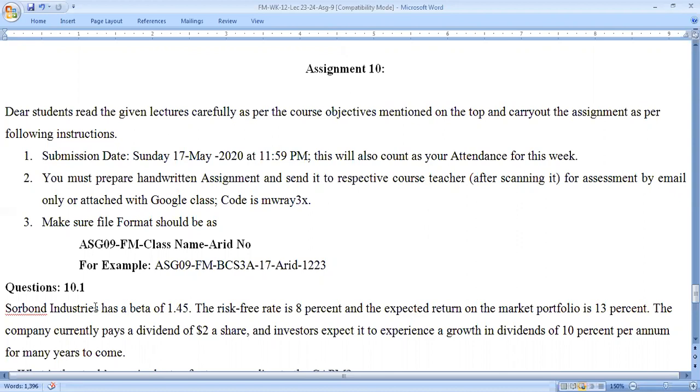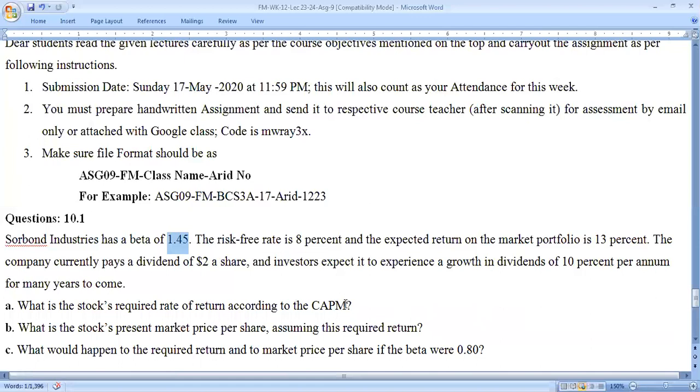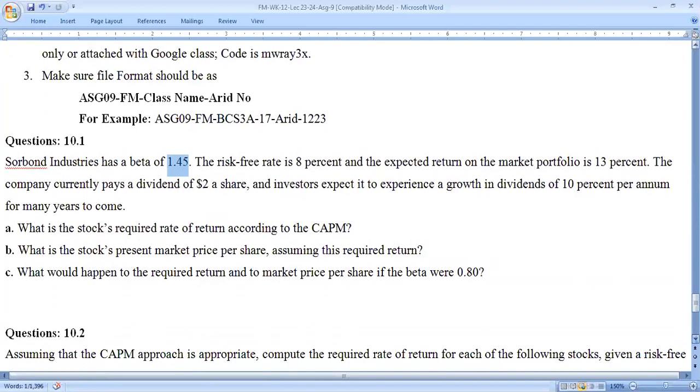Question 10.1: Industrial Beta is 1.45, risk-free rate is 8%, expected return on the market portfolio is 30%. The company currently pays a dividend of $2 per share. Investors expect a growth in dividends of 10% per annum for many years to come. Now let's look at the information. You have done all the work, if you have understood this, you can easily get this question. The beta value is changed, so you have to apply that.